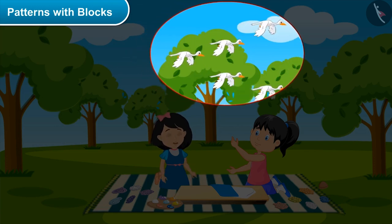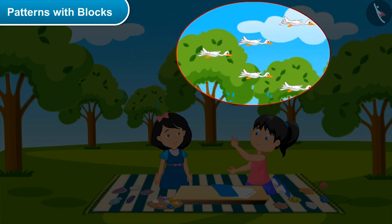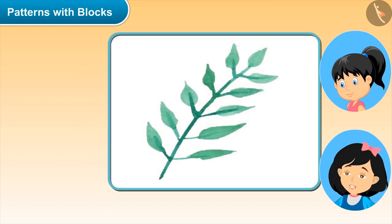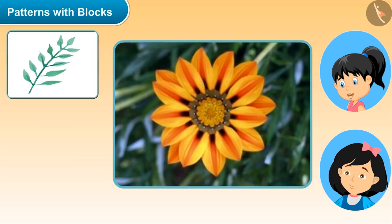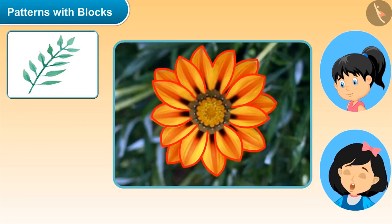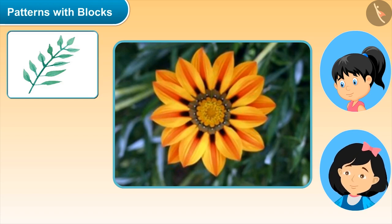Now look at this branch. Can you see a pattern in this? In this, the leaves are arranged side to side in a nice pattern. Look how beautiful they are looking. And look at this flower — how beautifully the petals are decorated. This is also a pattern. You can see many such patterns in nature. Look around, can you find any more patterns?